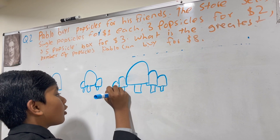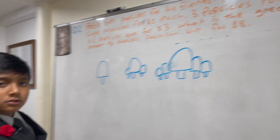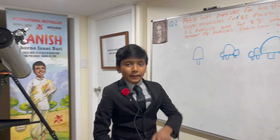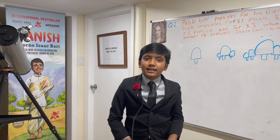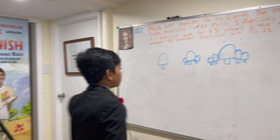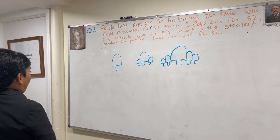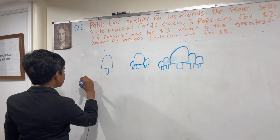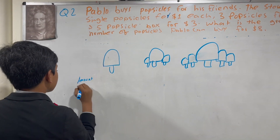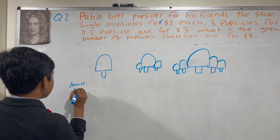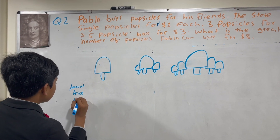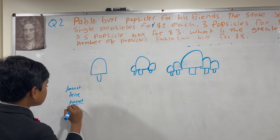Here are five popsicles — yes, I know they look like ping pong rackets. So let's look at the amount, the price, and the amount over the price.